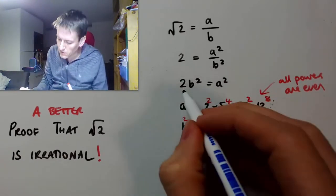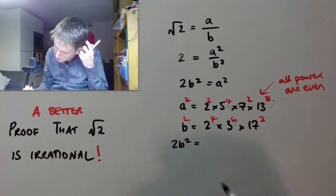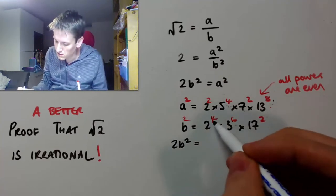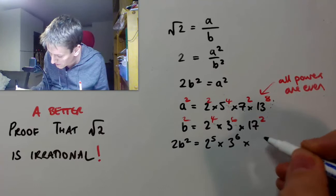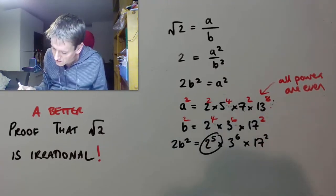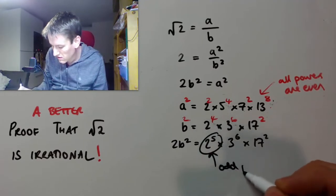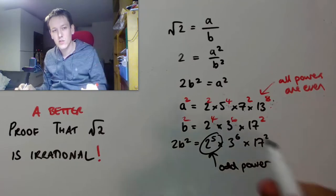So, let's think about this 2 times b squared. Well, 2 times b squared will just be b squared, but with one extra factor of 2. So, this 2 to the 4 now becomes 2 to the 5. So, I've got 2 to the 5 times 3 to the 6 times 17 squared. And so, the power of 2 here in 2b squared is an odd power.